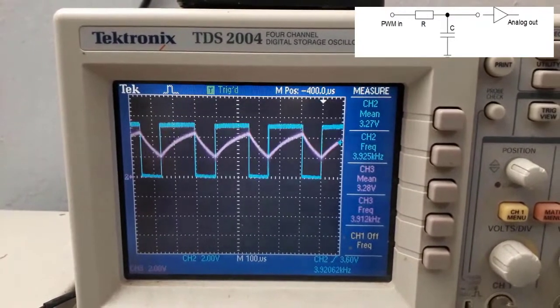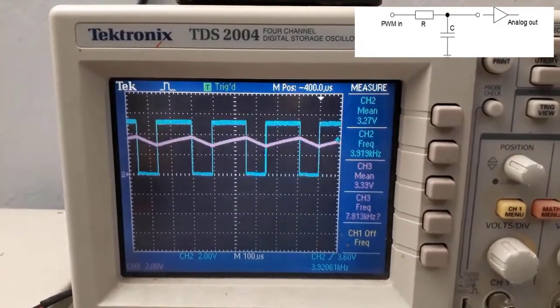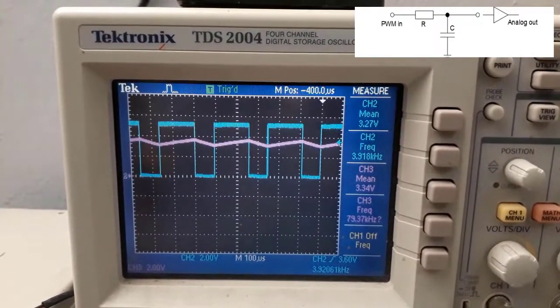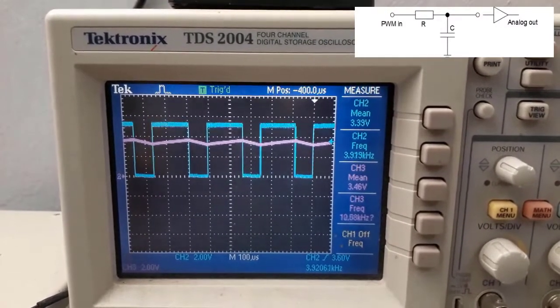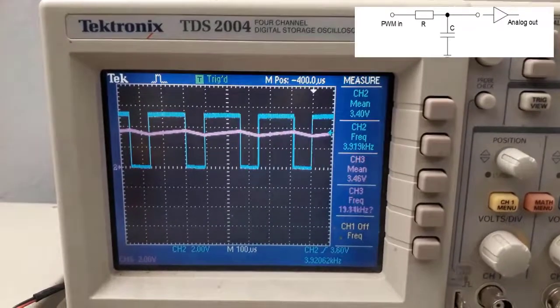Now, if I just swing it back, you're going to see now I'm getting now a constant DC signal. And the frequency is now very slow. It's no longer 3.9 kilohertz. It's too slow that the scope can't even read it.